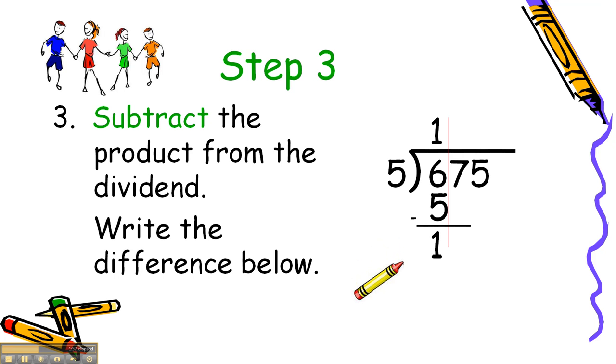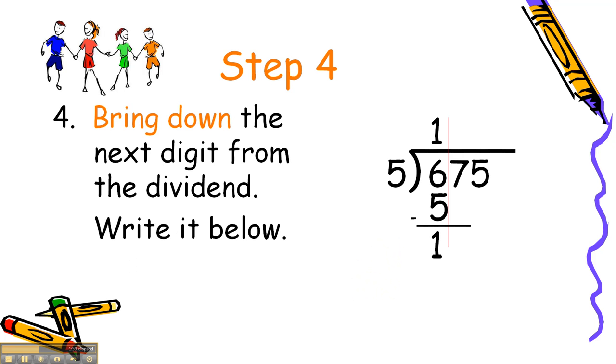Now let's go to step 4. Bring down the next digit from the dividend and write it below. The next digit in our number that's being divided, or the dividend, is 7. So we bring the 7 straight down and bring it next to the 1. Now we're ready to start those steps again.